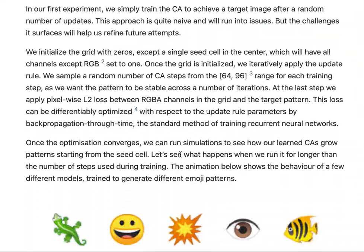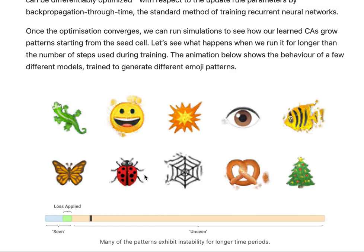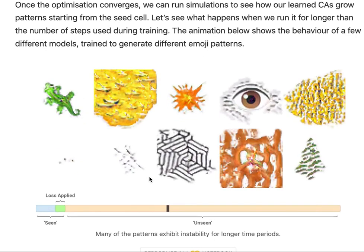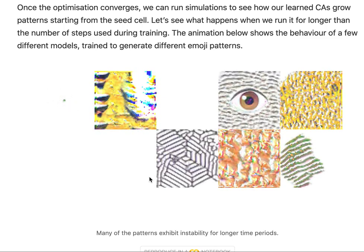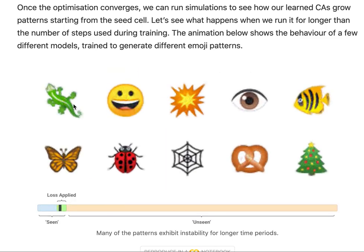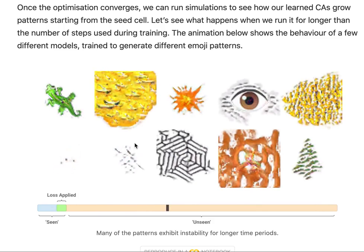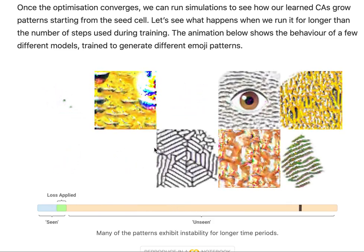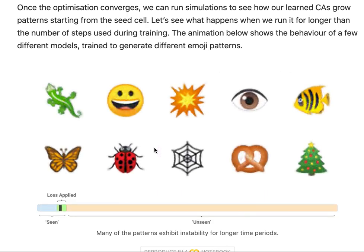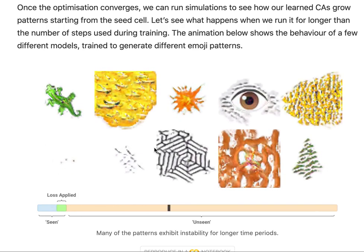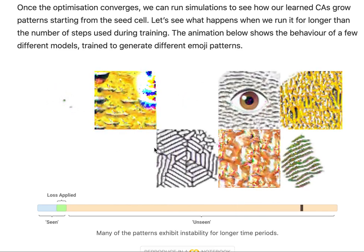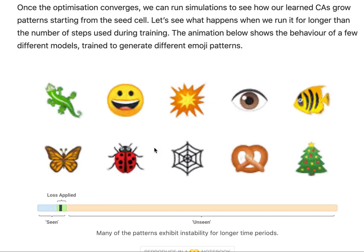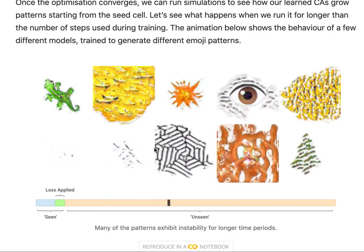So what does this get you initially? Here is an animation — if they train this just by backpropping through time with a target pattern and then let it run, these patterns actually emerge, which is pretty cool. But if you let them run for longer than they've been trained, you basically have no guarantees on what's going to happen. These update rules are simply trained to achieve the pattern within a certain number of steps. If you apply the update rules for longer than that, these update rules will simply continue and produce some weird stuff.